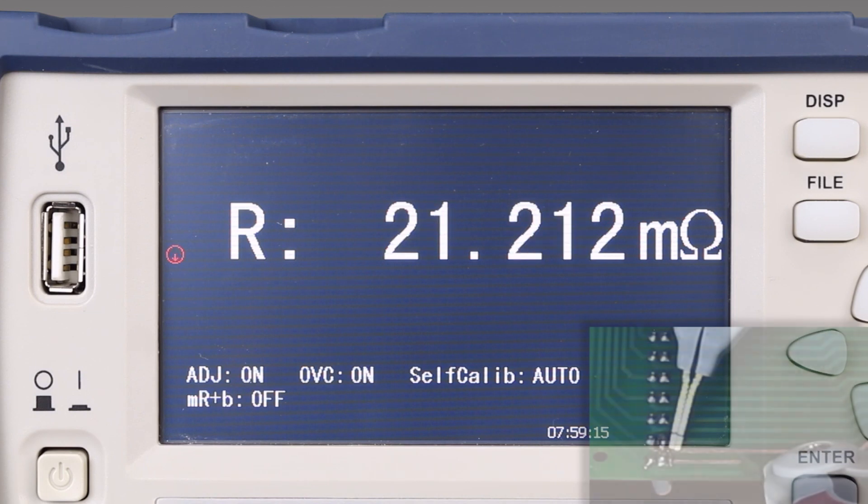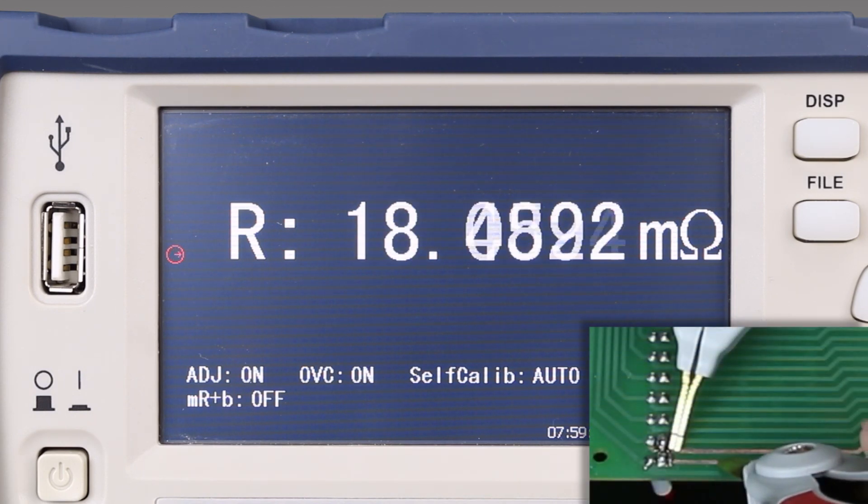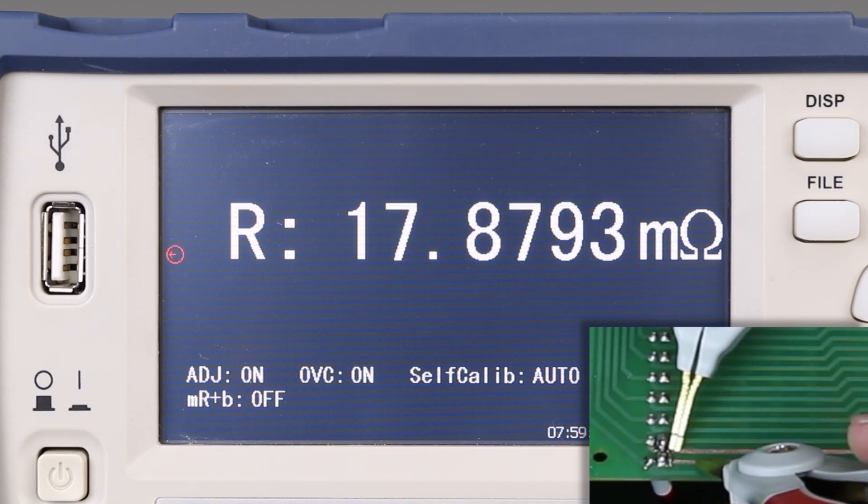We need to try going back the other way, and now you see the resistance decreasing. What you'll notice is how smooth the measurements are and how easy it is to see the changes.